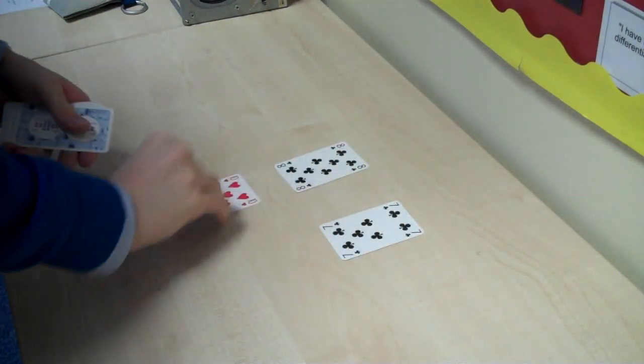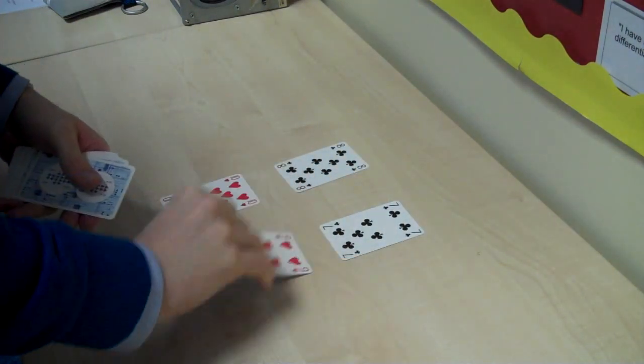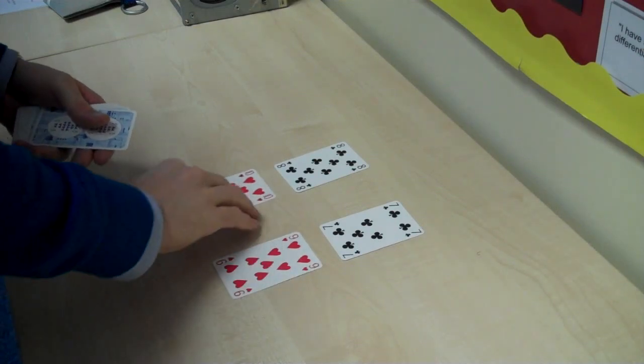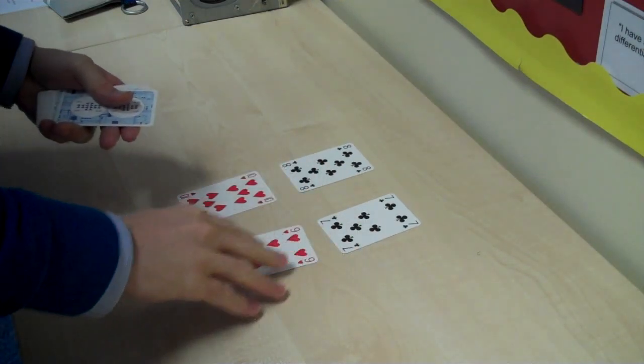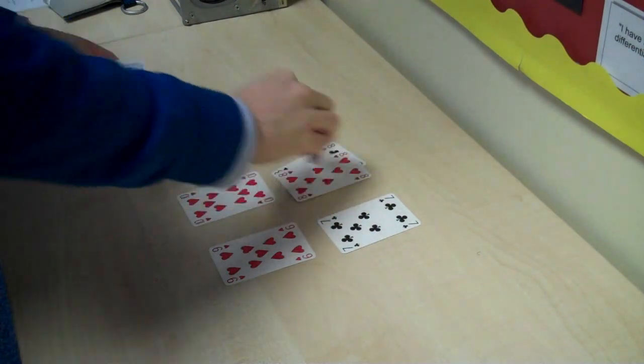And what you do is you turn the cards over in a particular order, in a sequence. So now we're going top left, top right, bottom left, bottom right. And the kids will go, hmm, okay, that's good.